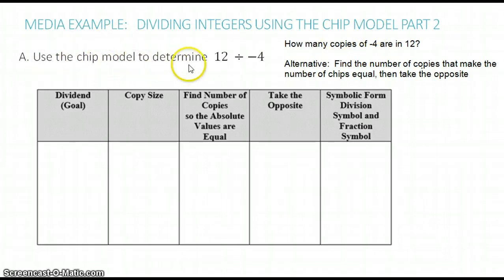So use the CHIP model to determine 12 divided by negative 4. Using the idea we talked about in the last video, that would be how many copies of negative 4 are in 12. Well, this is a little problematic, and let's see why.